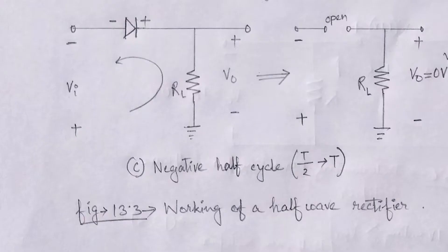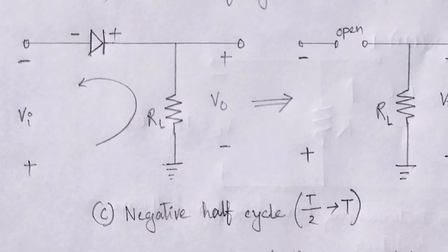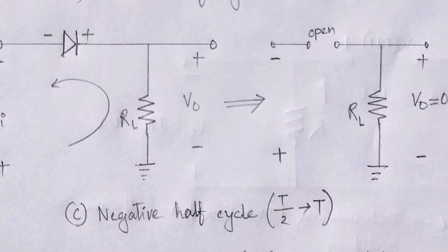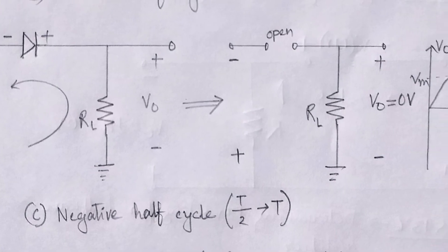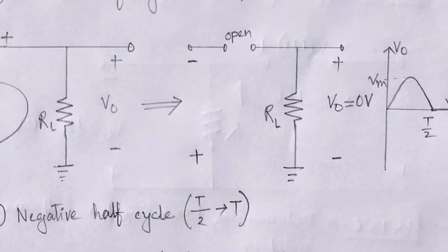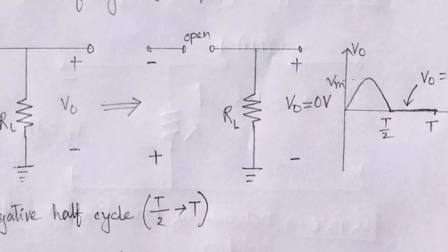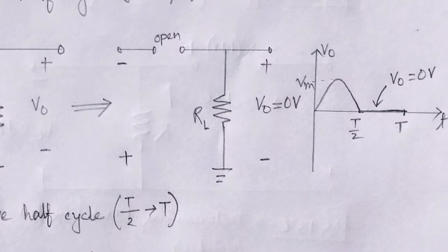Now, let us analyze the circuit for the negative half cycle. The diode is reverse biased and works as an open circuit. This results in absence of charge flow, or acts as an open circuit. Therefore, the output voltage becomes zero during this period.